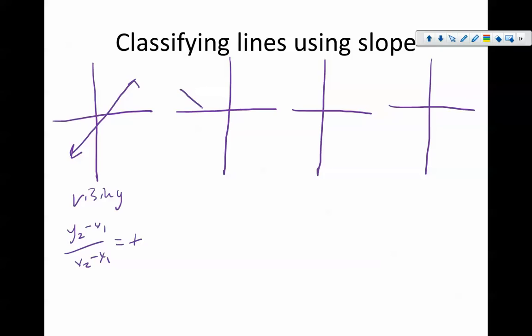Now, that's going to be different on a negative number. Again, on a negative number, the two points that we choose, as we move left to right, we're going to end up with a negative number when we do this. So negative lines that slope down as they go to the right are going to have a negative slope and will always have a negative slope.